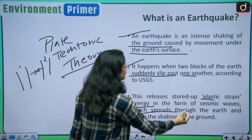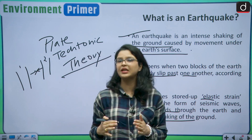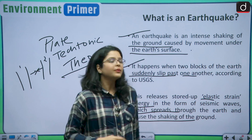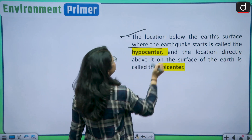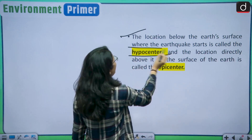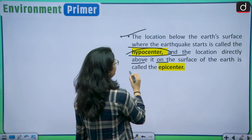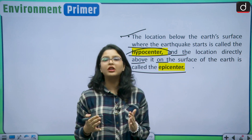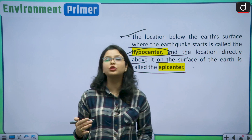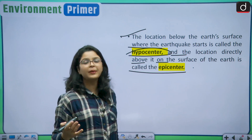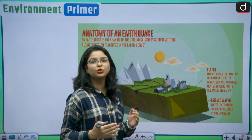These seismic waves spread through the earth and cause the shaking of the ground, producing the earthquake we experience. The location below the earth's surface where the earthquake starts is called the hypocenter, and the location directly above it on the surface of the earth is called the epicenter. Let us now understand the anatomy of an earthquake through a pictorial representation.